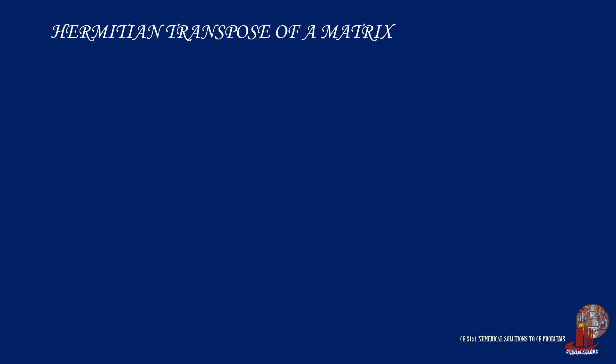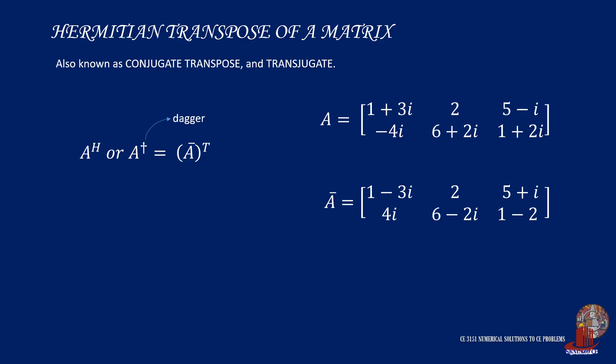The other operation for complex matrices is Hermitian transpose, which is also called conjugate transpose or simply transjugate. The operation is notated as a superscript h for Hermitian or a superscript dagger with the matrices name. And this is taken as the transpose of the matrices complex conjugate. With the same matrix used in a prior example, Hermitian transpose is taken as the matrices complex conjugate, and then take the transpose so a dagger inverts the elements from rows into columns.